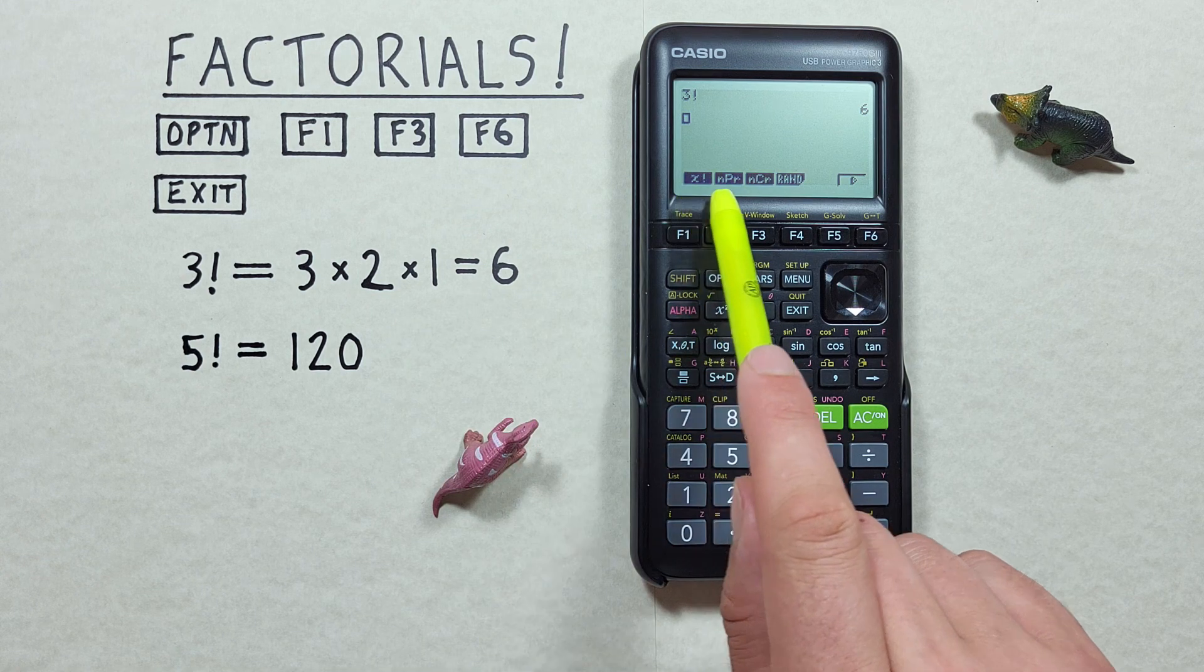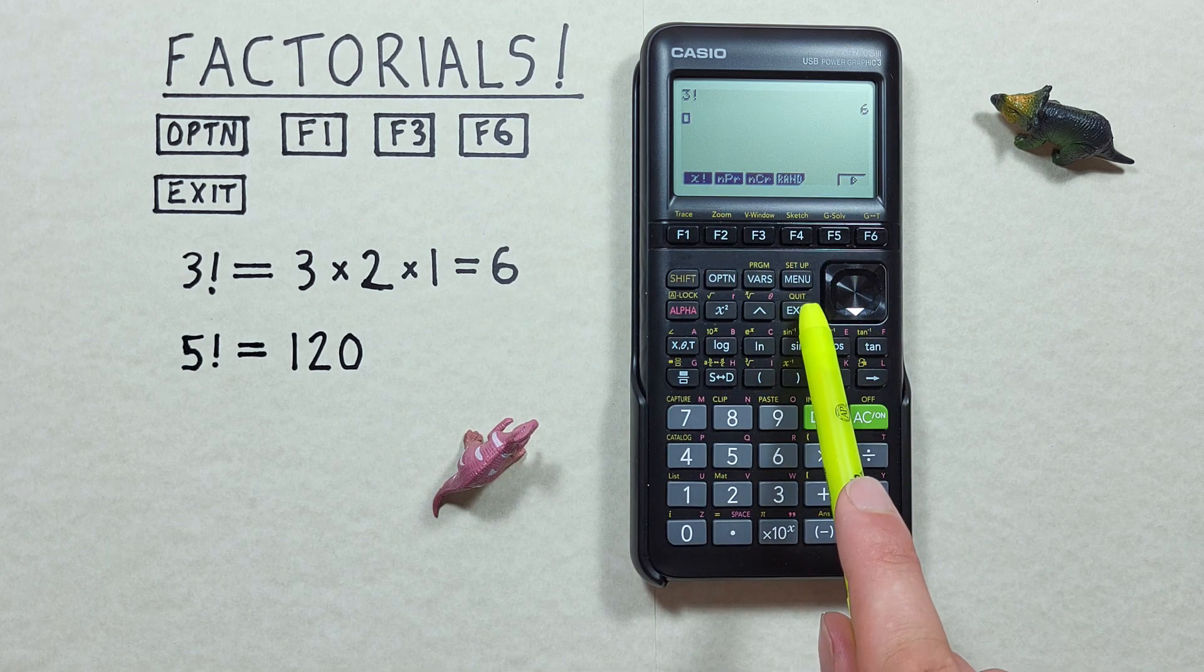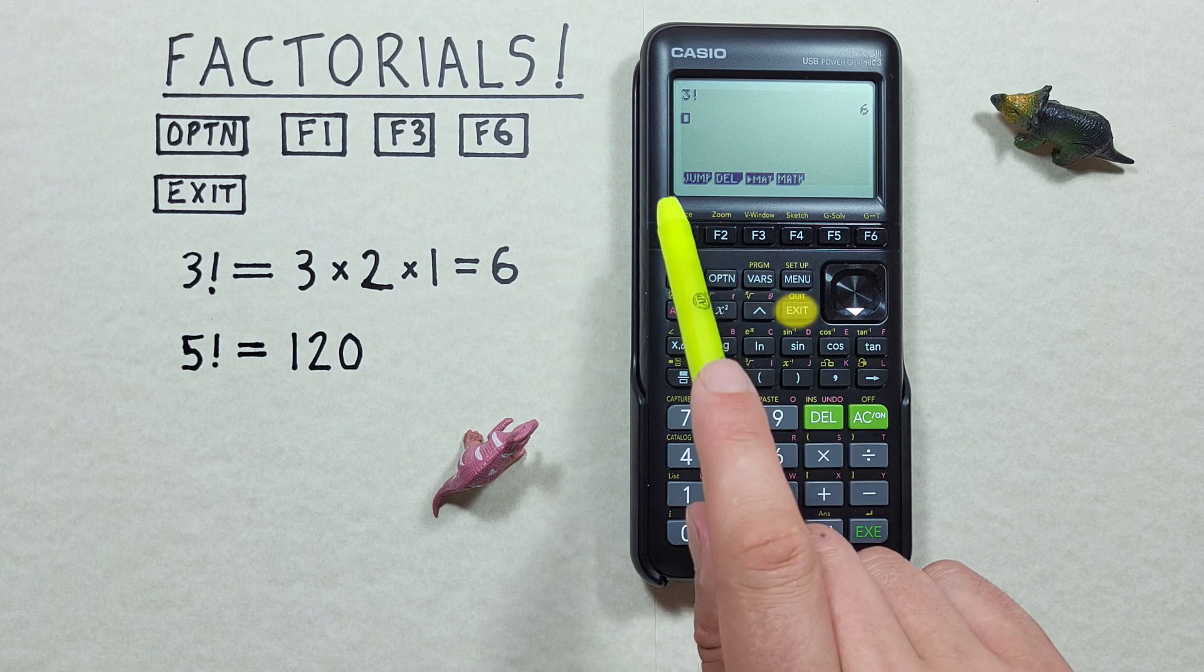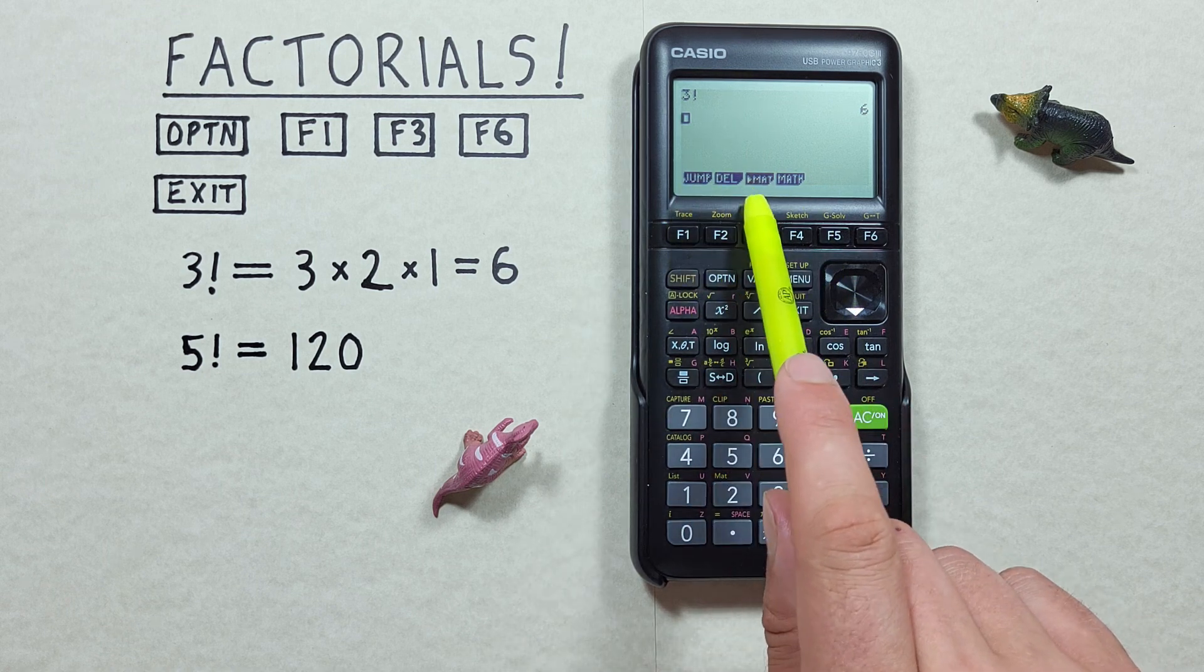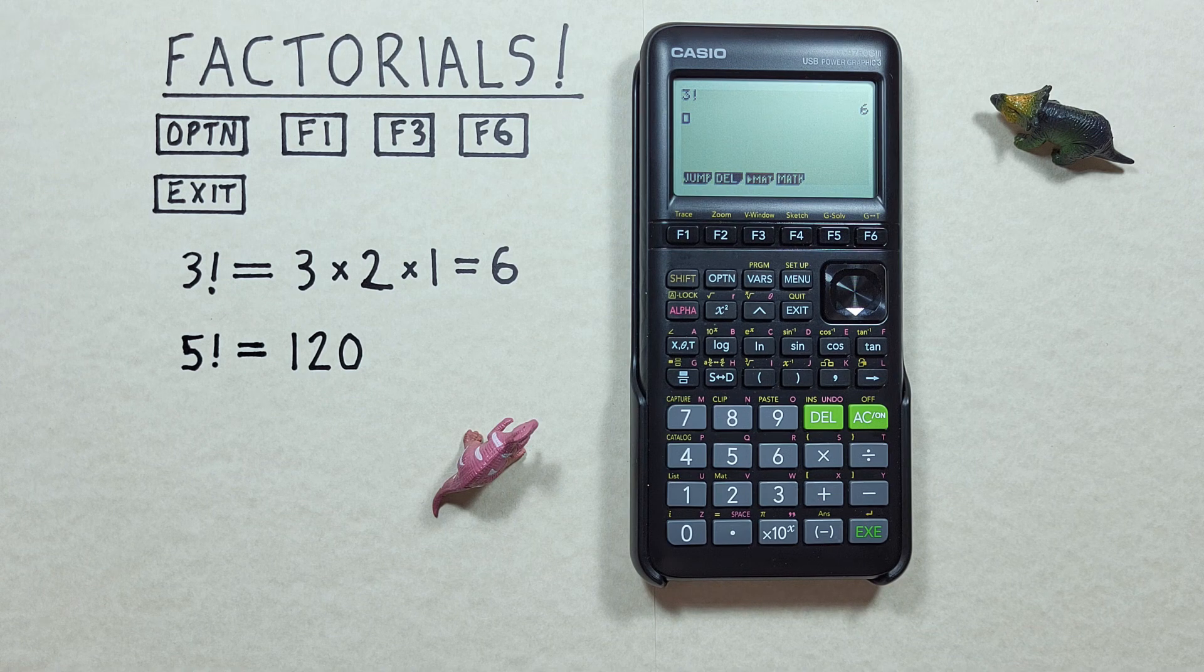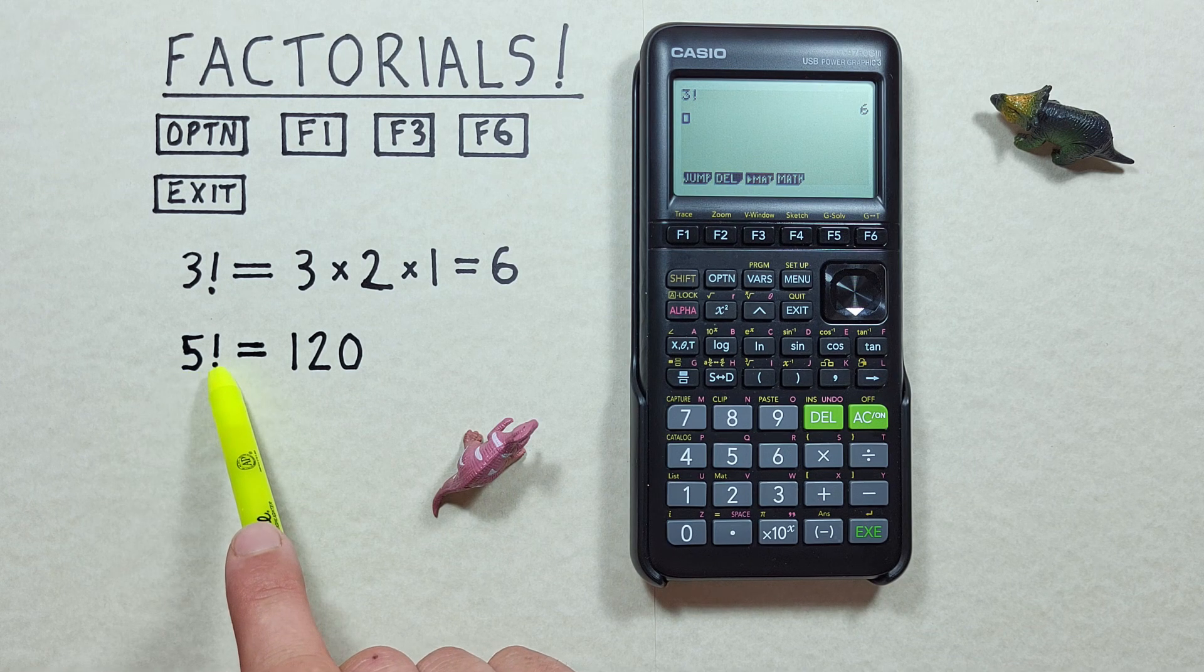To go back to our original menu we can press the EXIT key and that gets us back to this menu here. Another example, if we want to find 5 factorial.